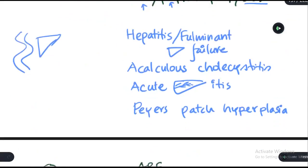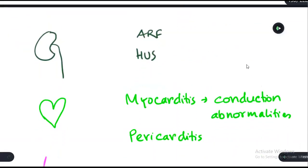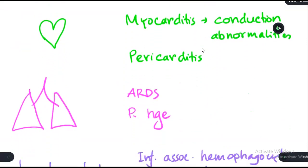Involvement of the GI and hepatobiliary system can lead to hepatitis, which can lead to hepatic failure, acalculous cholecystitis, and acute pancreatitis — so involvement of three organs: liver, gallbladder, and pancreas. There can also be Peyer's patch hyperplasia in the terminal ileum. In the renal system, there can be acute renal failure or hemolytic uremic syndrome.